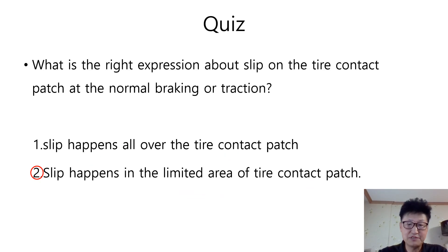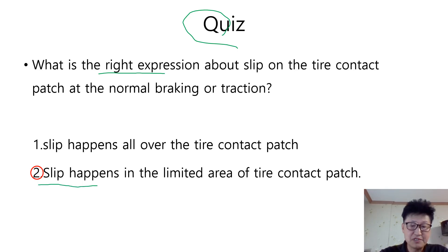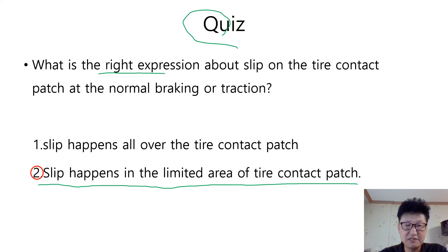Returning to the quiz: what is the right expression about the slip on the tire contact patch at normal braking or traction? The answer is number 2 — slip happens in the limited area of the tire contact patch.